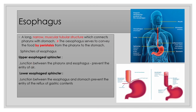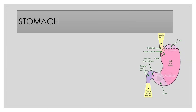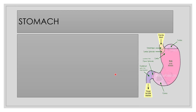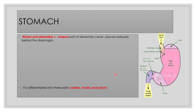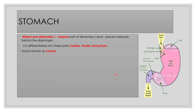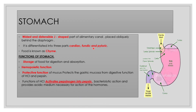The esophagus is a narrow muscular tubular structure connecting the pharynx with the stomach. The stomach is the major organ — a J-shaped organ placed obliquely behind the diaphragm. It is differentiated into three major sections called cardia, fundus, and the pyloric section.